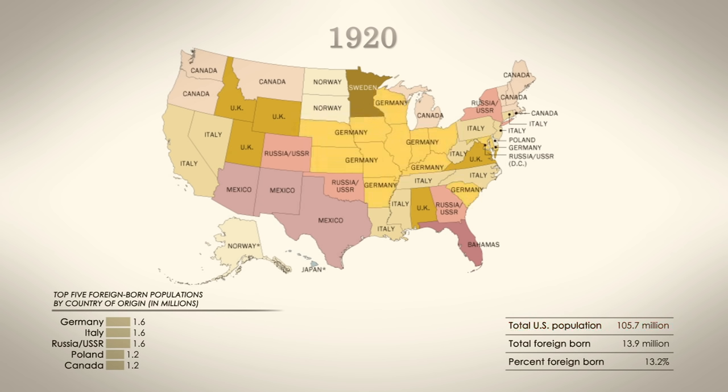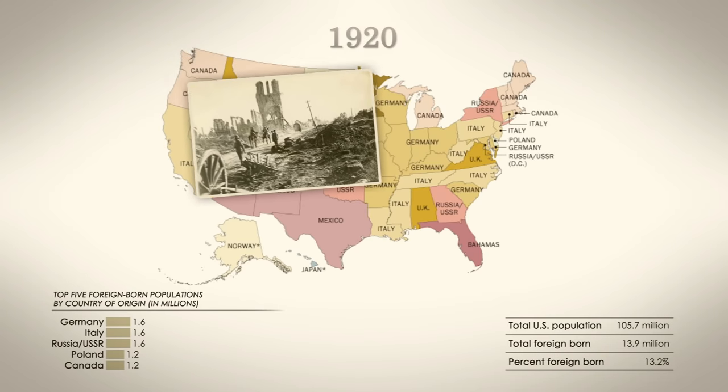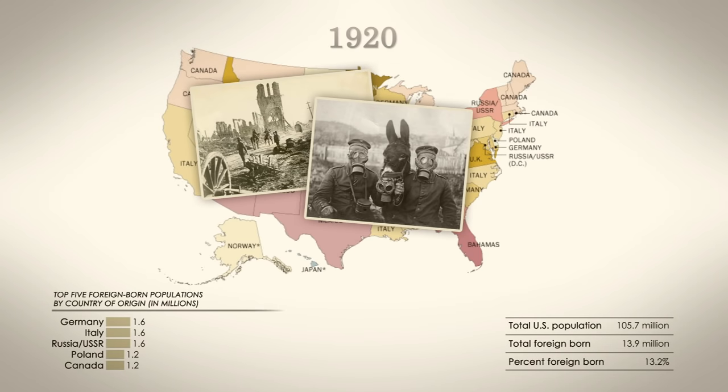With the American population exceeding 100 million in the 1920 census, there were equal numbers of German, Italian, and Russian-born immigrants. Many had fled Europe to escape the horrors of World War I.